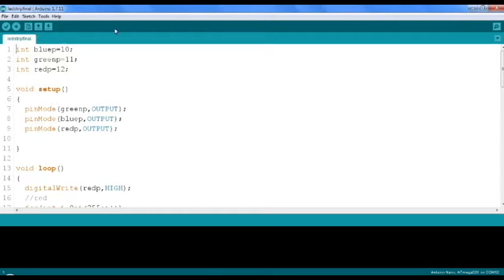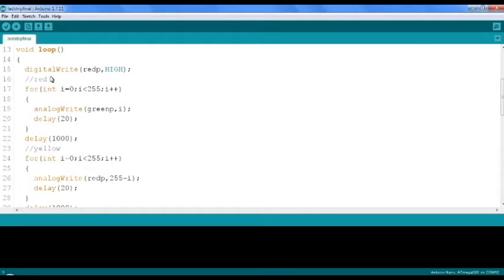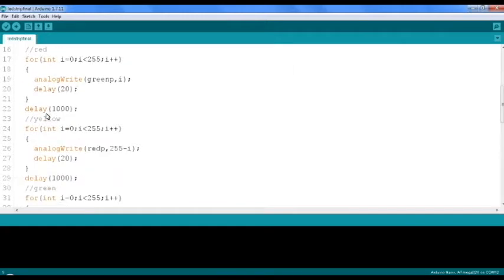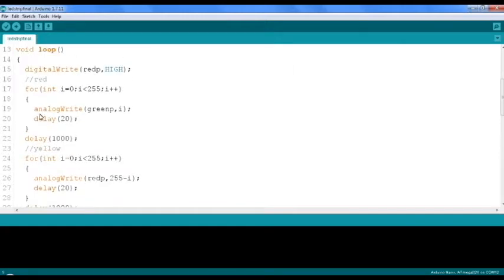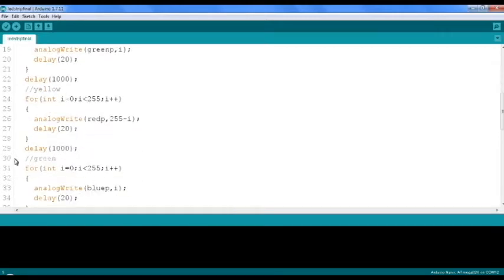Let's get to the program. Pins for the LEDs, pin modes, and pretty much everything here is just the transition from color to color. Like from red then to yellow, which is basically red turning on the green. Then from yellow to green, turning off the red.